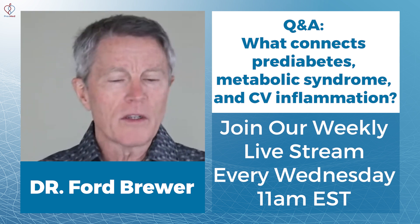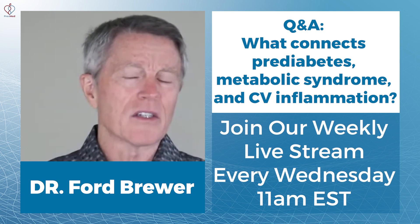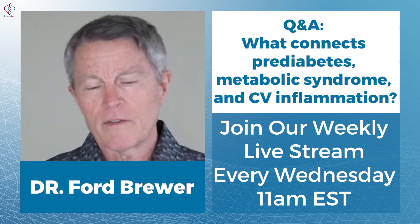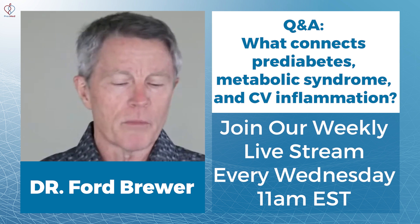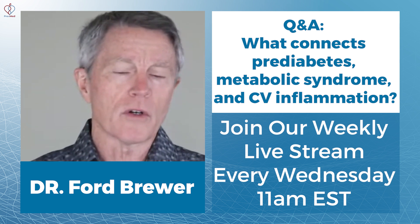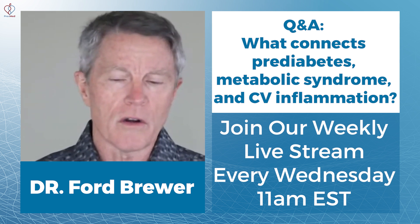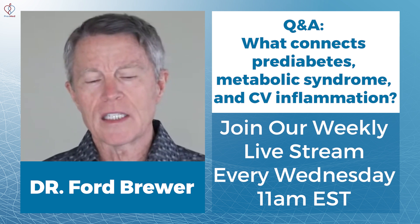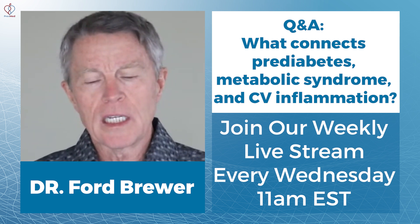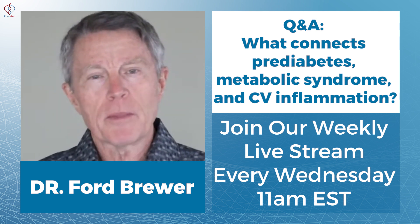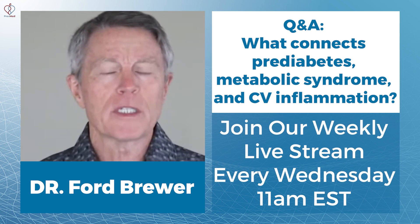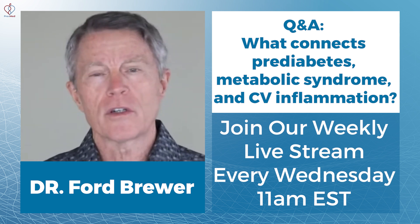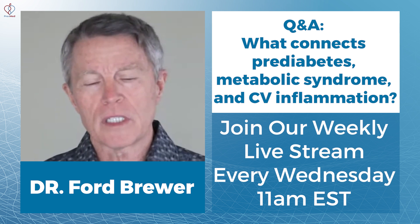Another way to look at the distinction — again, it's an artificial distinction — is where people have several things: high blood pressure, they're overweight, their abdominal girth is large. Those were all physical signs and symptoms that we're seeing in people who had prediabetes. So you'll hear me use the term insulin resistance.